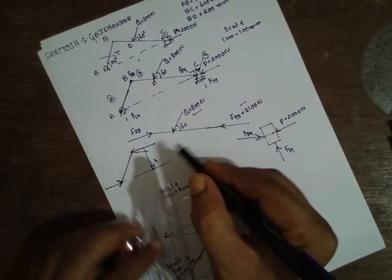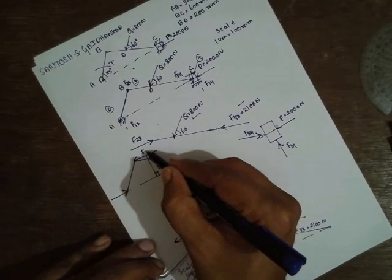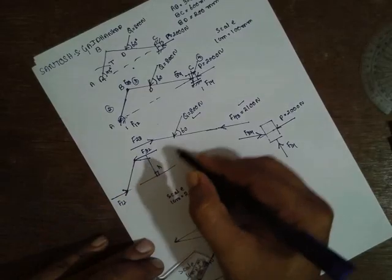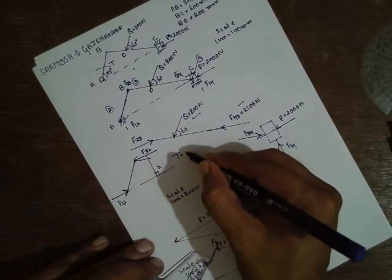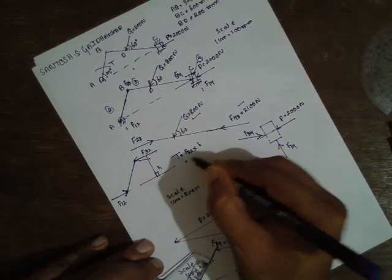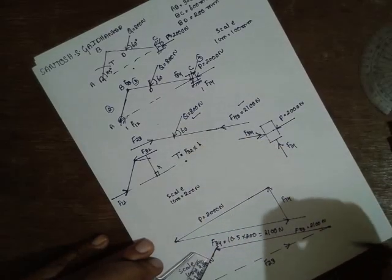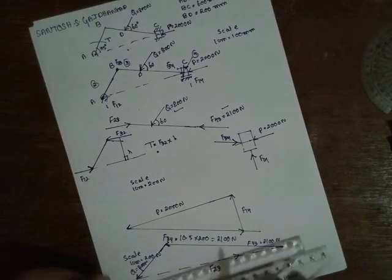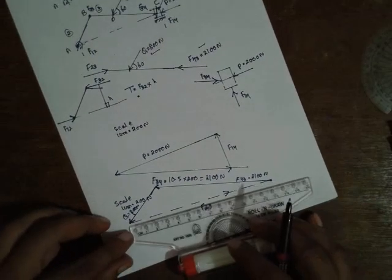This will close the loop and this is nothing but F23. Now this link has to be transferred to this one. Just with the help of a ruler, just move it out, transfer here in the opposite direction. But the force is F23. If it is F23, the next force is exactly parallel to this one.